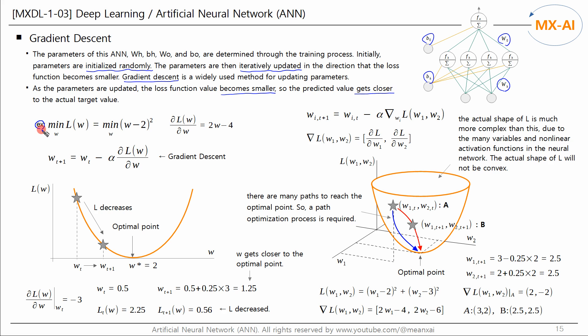Now let's look at the gradient descent method through a simple example. Let's say the objective function is a function of W, and our goal is to find the minimum point of this loss function using gradient descent. By differentiating with respect to W and finding the point where the slope is zero, it is easy to see that the optimal W is 2. This equation is easy to solve because it has only one variable. However, this method is difficult when there are many variables — deep learning today uses millions or even more — so numerical analysis must be used.